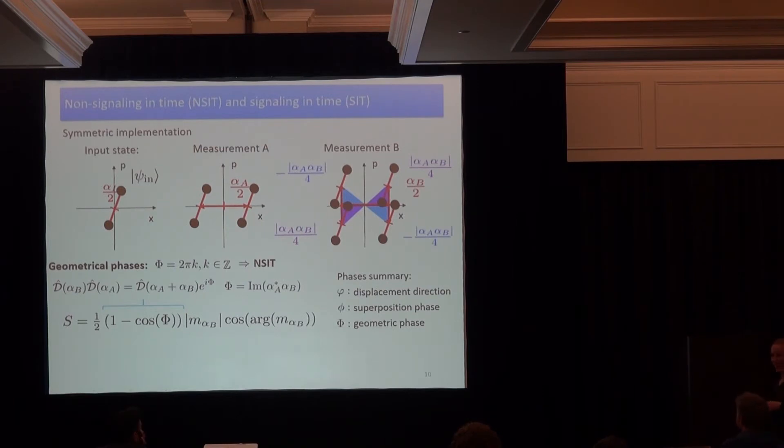So there are quite some phases involved in these protocols. Here just a quick summary, but don't worry, I just explain along the way. So we have the phase giving the displacement in phase space. We have the phase giving the relative phase between superpositions. And now finally, we have also geometric phases turning up. And these are exactly my control knobs of these experiments. Then there is a second symbol, this M, and I call this wave packet overlap, and it's just looking at how the input state overlaps with its displaced version. And for this measurement of non-signaling in time, what matters is the displacement used in the second measurement.